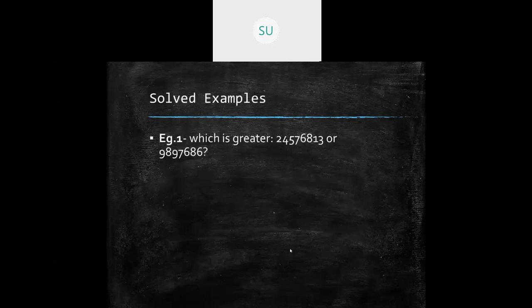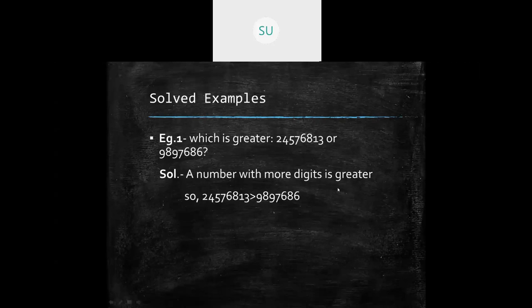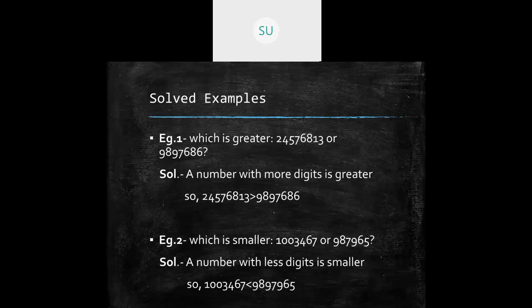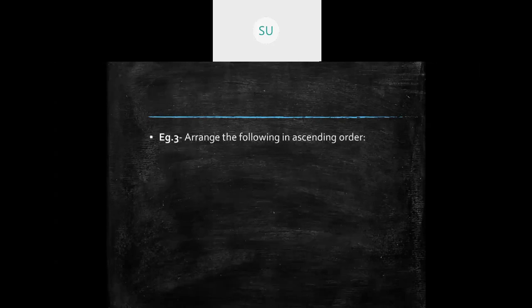For example: if the first number has eight digits and the second has seven, the first number is greater. In another example, if the first number has seven digits and the second has six digits, the second number is the smaller one — the number with fewer digits is always smaller.